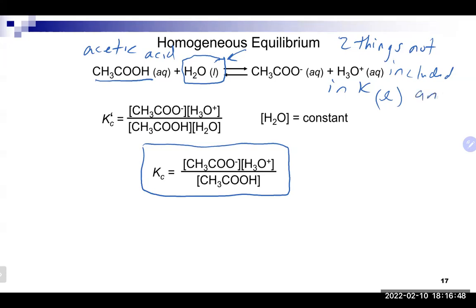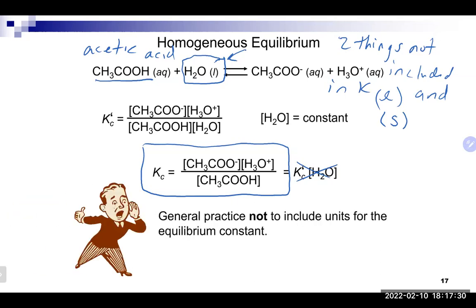The two things not included in the K expression are: (1) pure liquids — their concentration remains essentially constant and doesn't change much throughout the process; and (2) solids — like a rock tossed in a glass, a solid just sits there and doesn't actively participate. The only way a solid participates is if it dissolves and becomes aqueous — then it would be included. So aqueous species and gases are always included; pure liquids and solids are not.